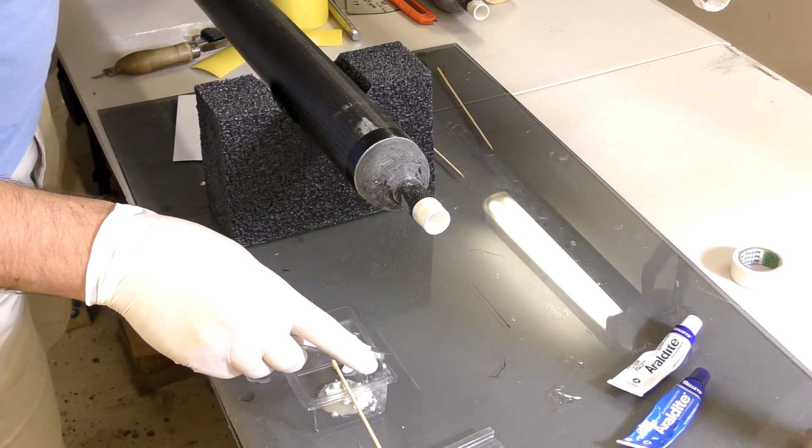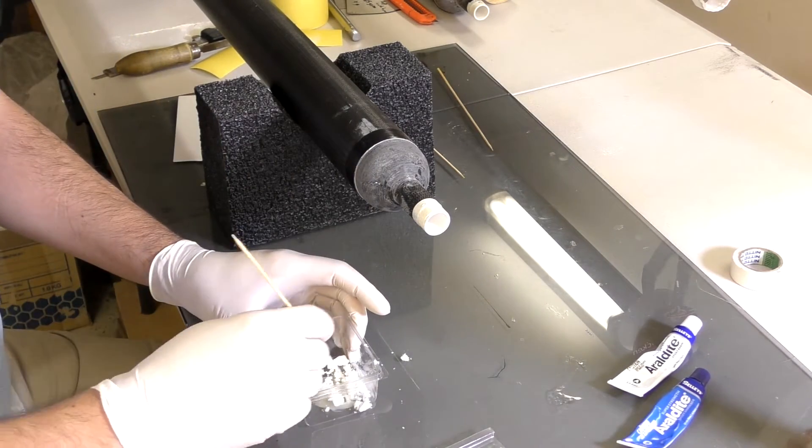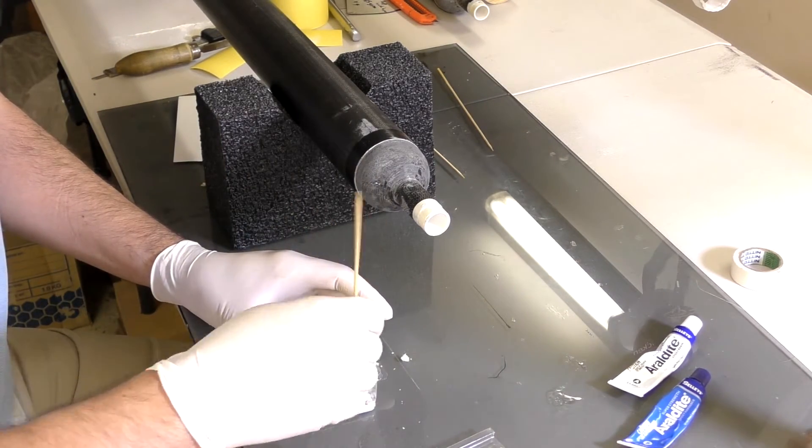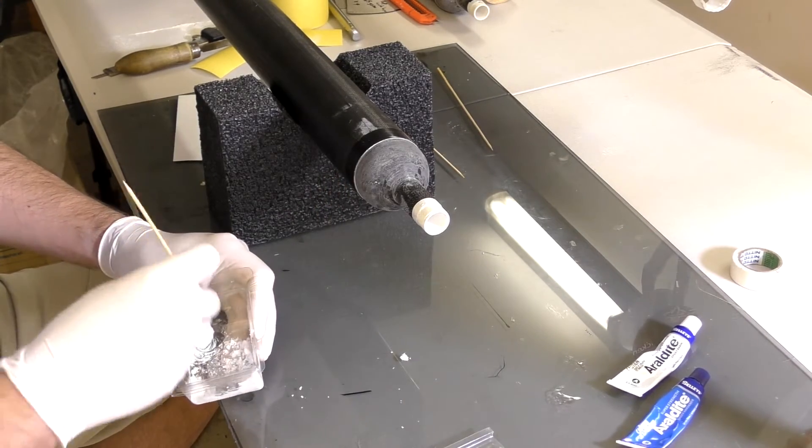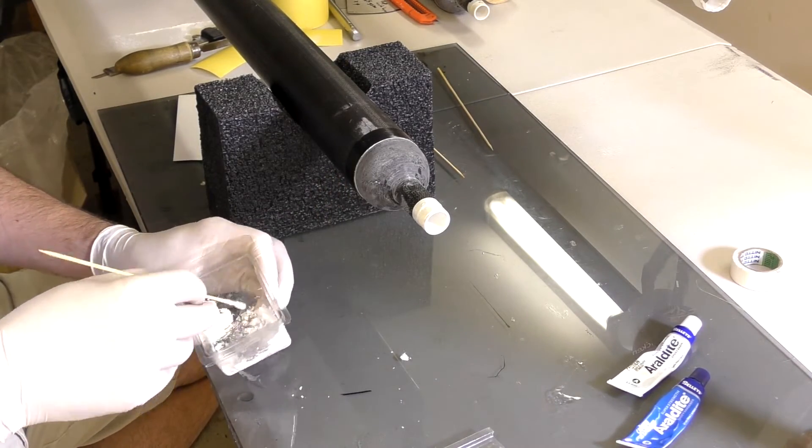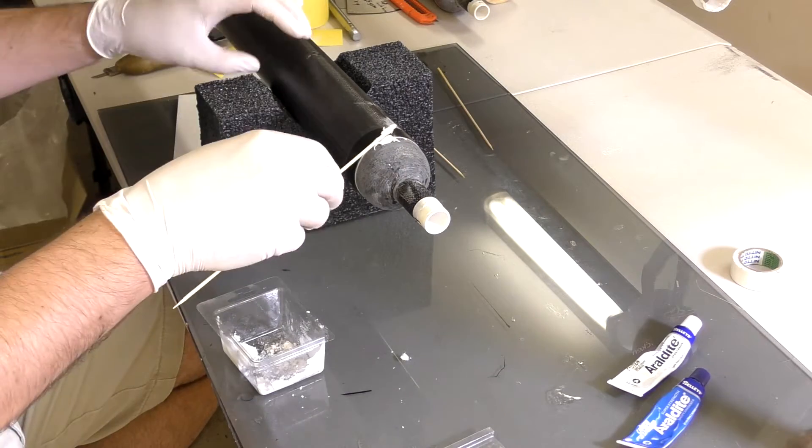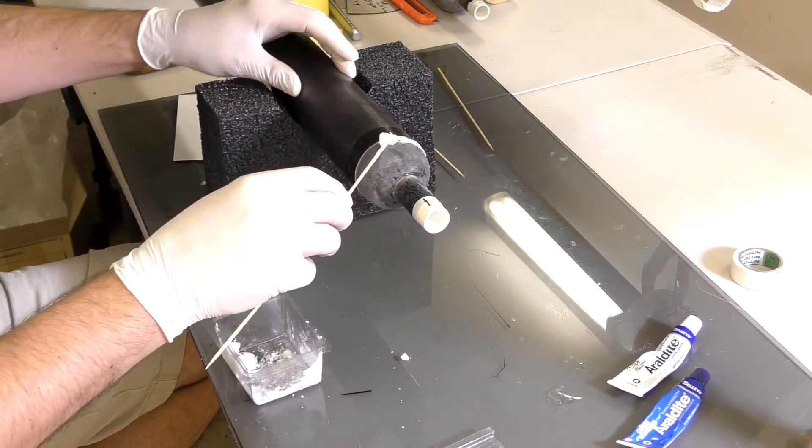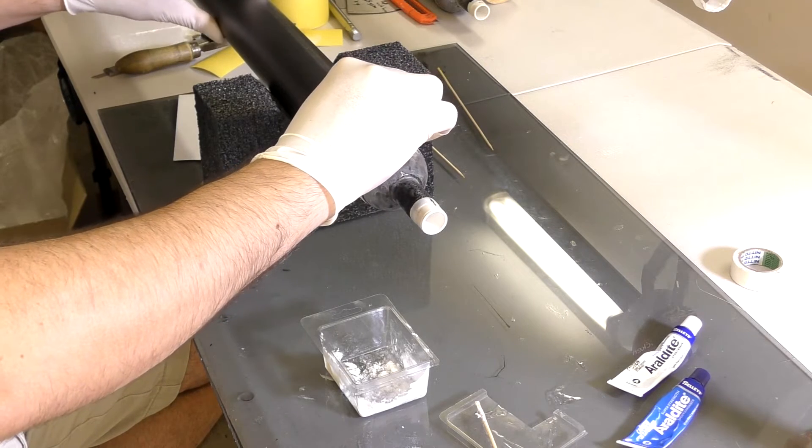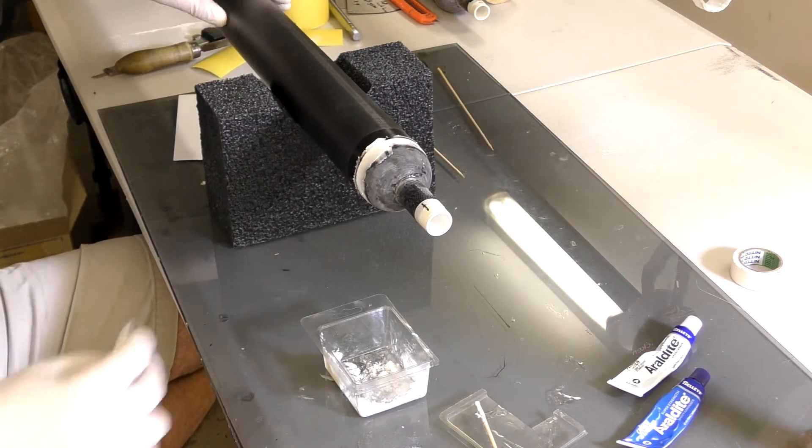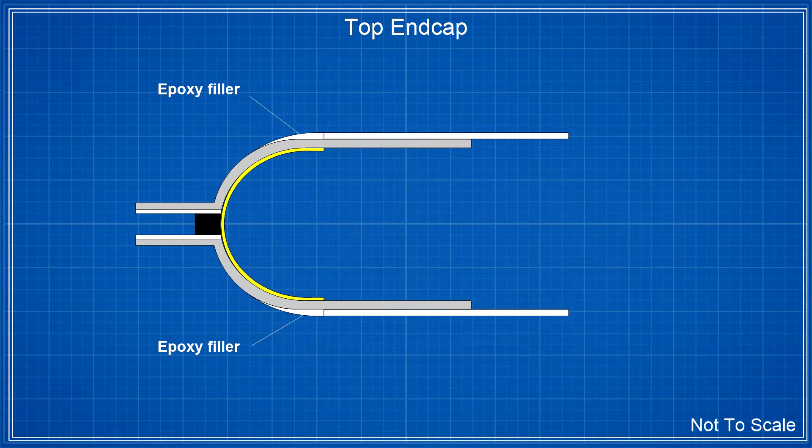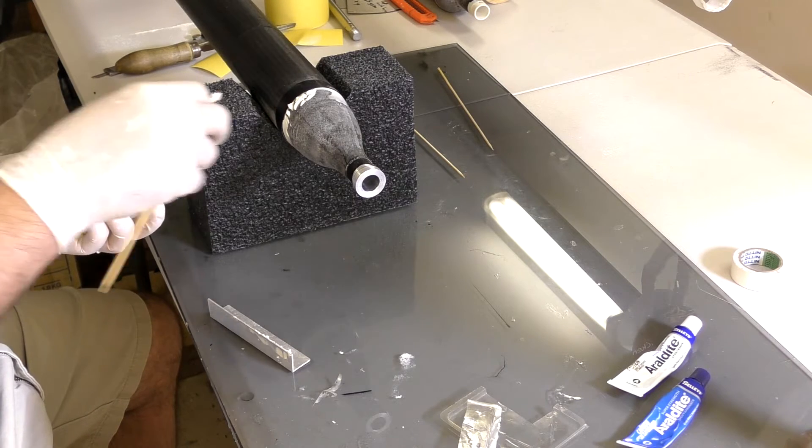There is a small step where the end caps meet the body tube. So before we add the top sleeve, these need to be filled in. For this we are using epoxy mixed with micro balloons to create a thicker paste. After applying it to the joint, we then use a piece of plastic to smooth it out. After it dries it gets sanded to the final shape. This is what the cross section looks like after the filler has been added. We also do that for the nozzle end cap.